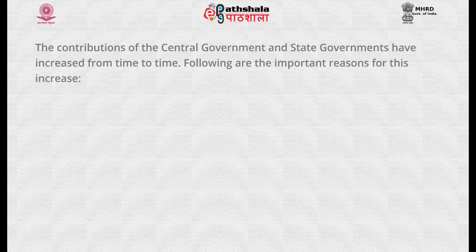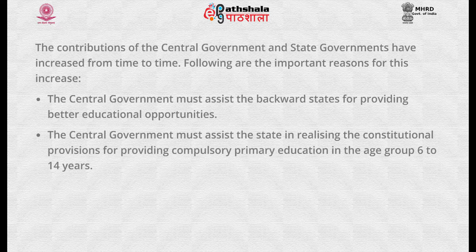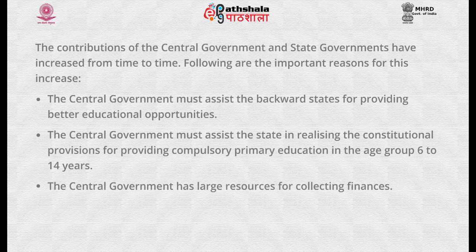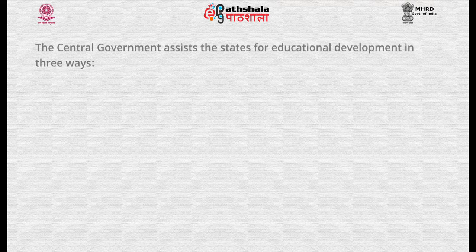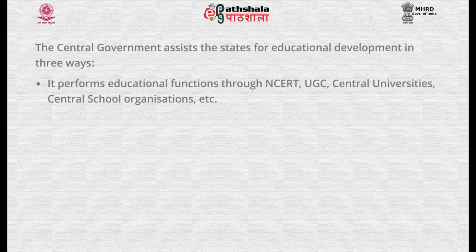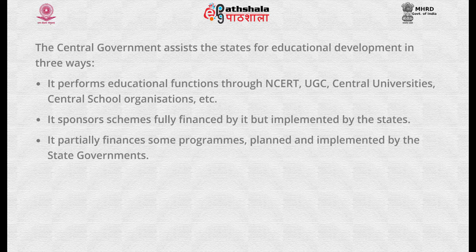The contributions of the central government and state governments have increased over time. The important reasons for this increase are: firstly, the central government must assist backward states for providing better educational opportunities; secondly, it must assist states in realizing the constitutional provisions for compulsory primary education for the age group 6 to 14 years; thirdly, the central government has large resources for collecting finances; and fourthly, the central fund must be utilized for providing equality of opportunity. The central government assists states in three ways: it performs educational functions through NCRT, UGC, central universities, central school organizations, etc.; it sponsors schemes fully financed by it but implemented by the states; and it partially finances some programs planned and implemented by the state governments.